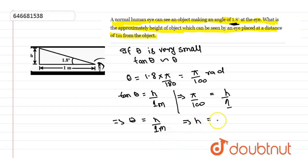equal to π/100 meter, which is equal to 0.031 meter. Okay, this is our answer. So here, the height of object is 0.031 meter.